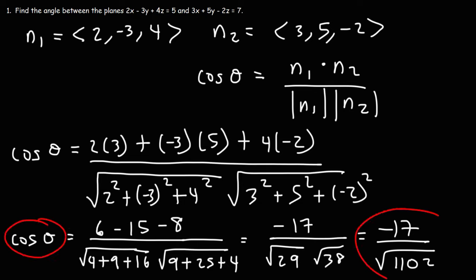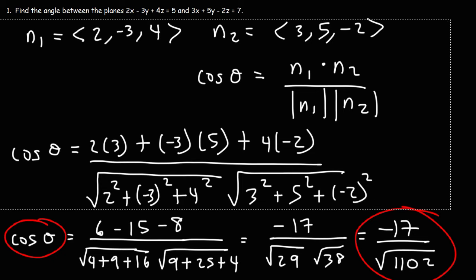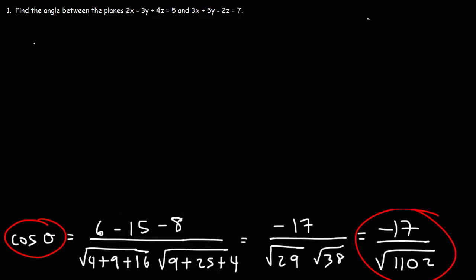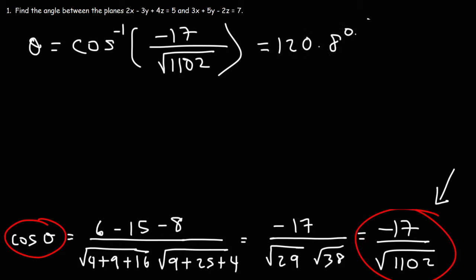So we have negative 17 divided by the square root of 1102. And so cosine is equal to that value. So now we can find the angle. So it's going to be the arc cosine of what we have here. Negative 17 over the square root of 1102. So go ahead and type that into your calculator. So you should get 120.8 degrees.